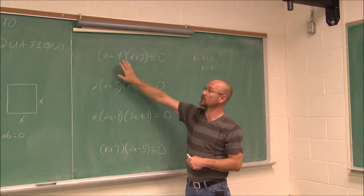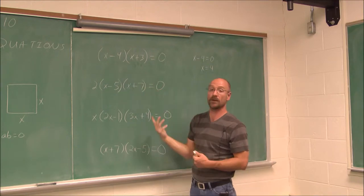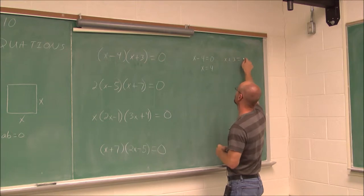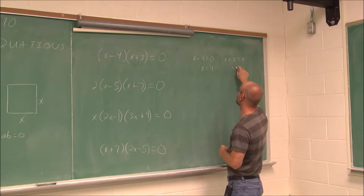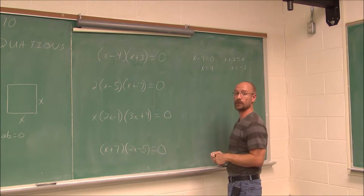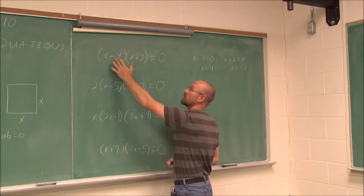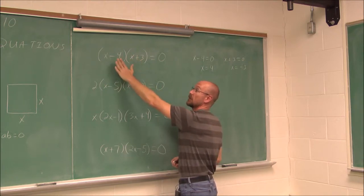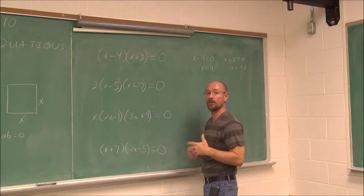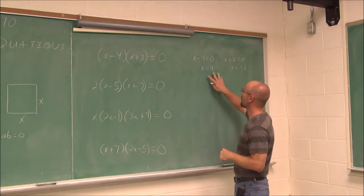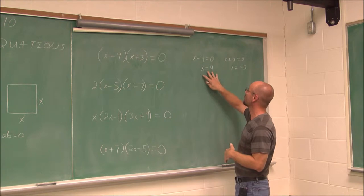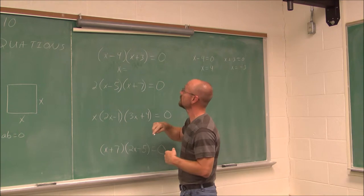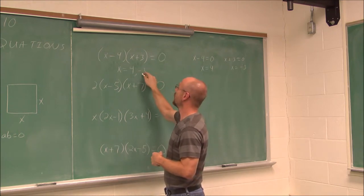There are two factors and they each have a variable. We can do the same thing for this one: x plus 3 equals 0. If I subtract 3 from both sides, I get x equals negative 3. If we plug it in to check: negative 3 plus 3 is 0, and 0 times anything is 0. So we find that our zeros or roots are x equals 4 and x equals negative 3. The solutions or roots of this equation are positive 4 and negative 3.